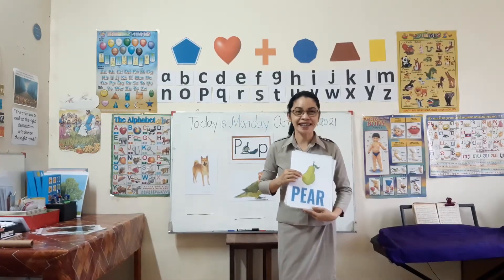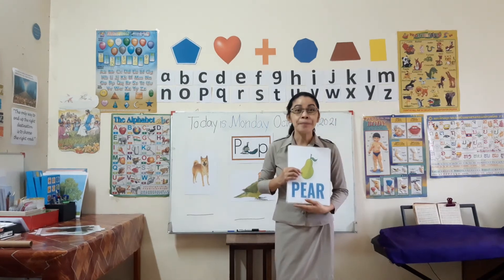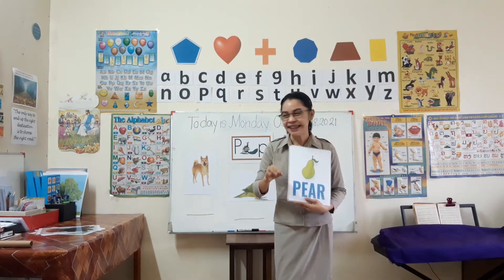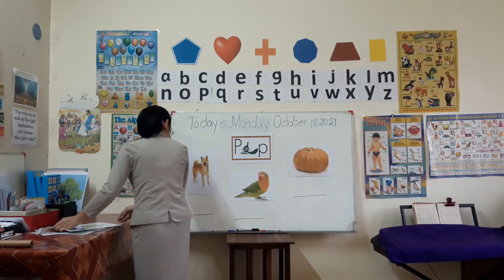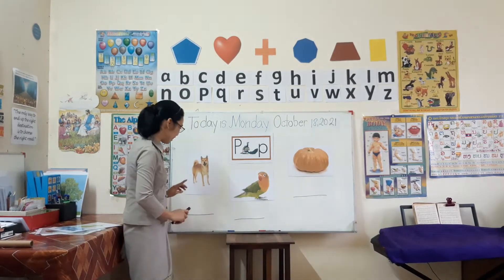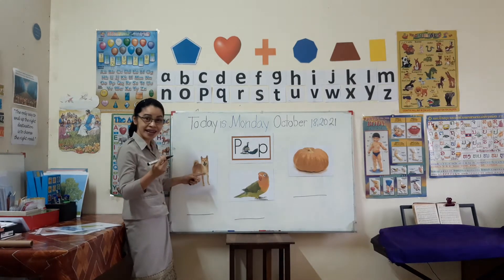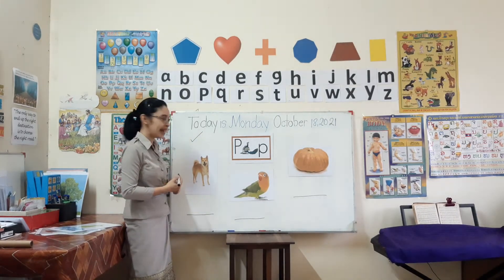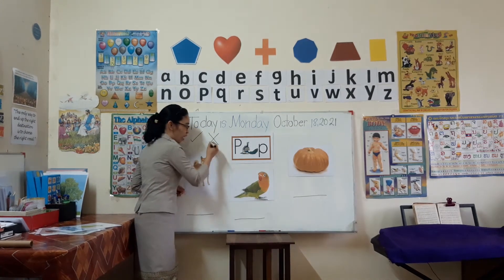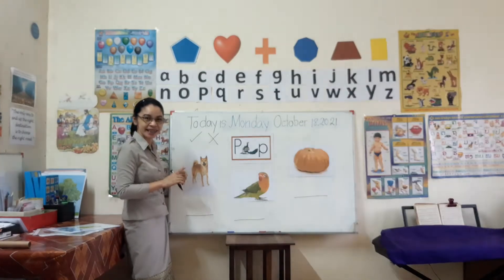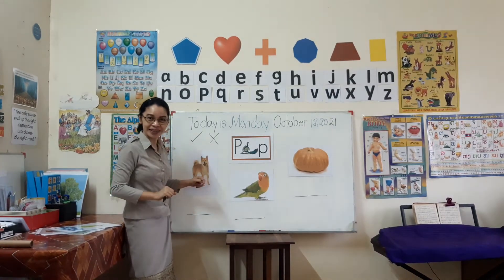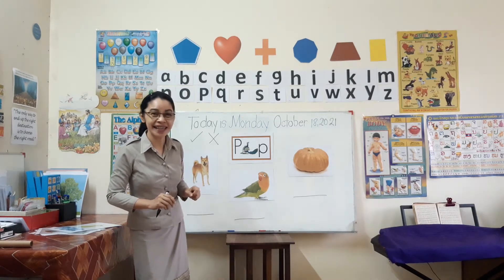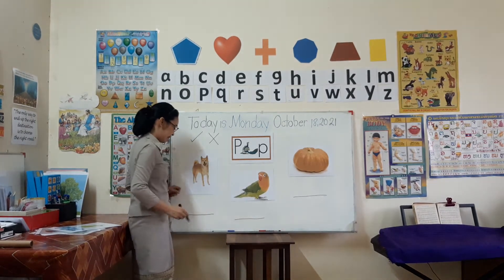All of these have the P sound. So we've learned the B sound, the M sound, and now the P sound. For our activity today, you will write a check or an X. If you hear the P sound, write a check. If you do not hear the P sound, write an X.